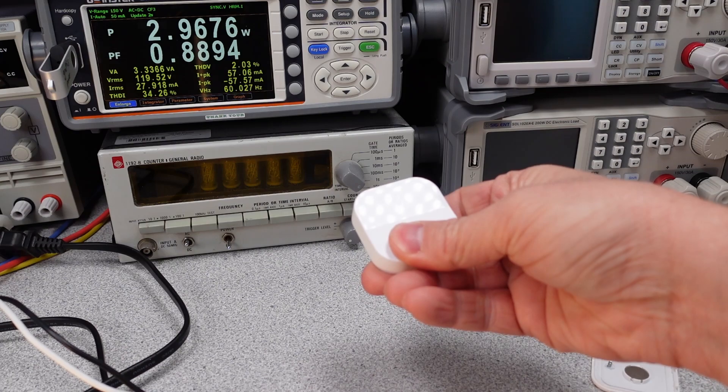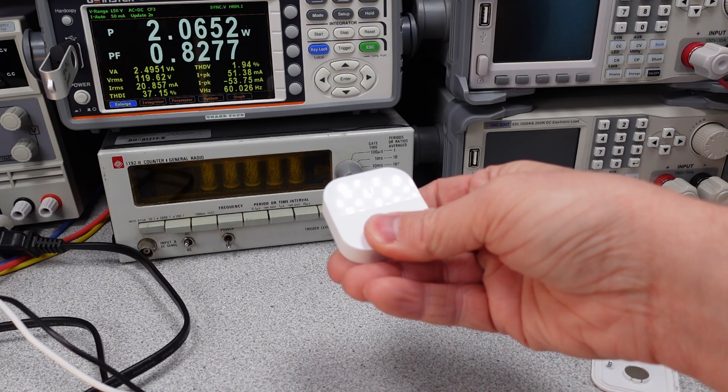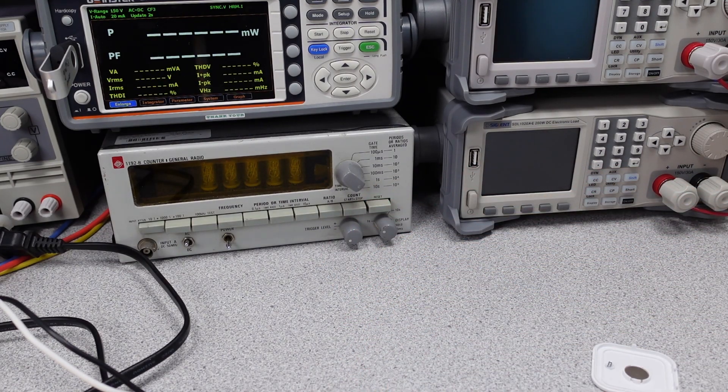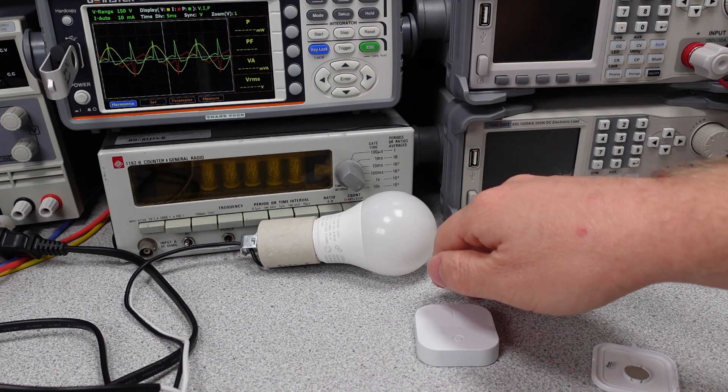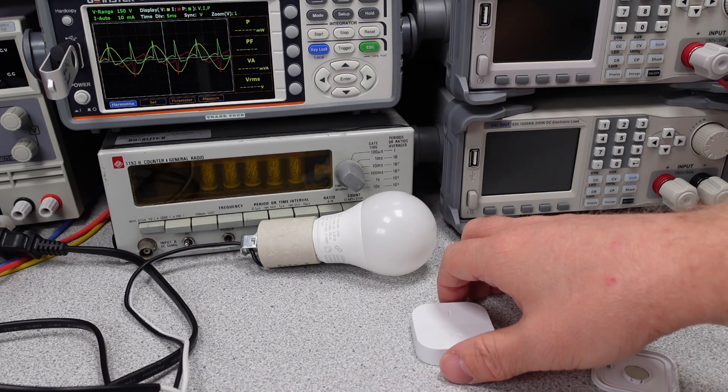Then, at idle, with the bulb off, it still maintains a fairly low power consumption, about 0.17 watts, which, with an active radio, really isn't that bad. The electrical noise at this point is also very reasonable. The power quality score is quite high for most modes.